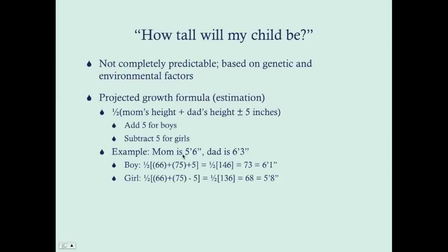For example, mom is five foot six (66 inches) and dad is six foot three (75 inches). For a boy, take one half of 66 plus 75 plus five — that's half of 146, which is 73 — six feet one inch tall. For a girl, it's half of 66 plus 75 minus five — half of 136, which is 68 — five feet eight inches tall. Note that the boy is a little shorter than dad, and the girl a little taller than mom. That's usually how it works out.